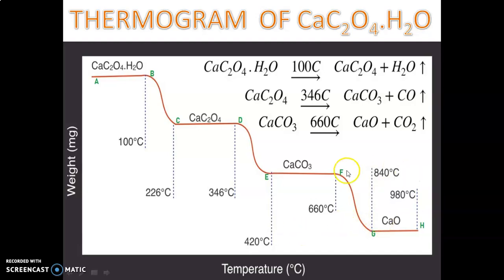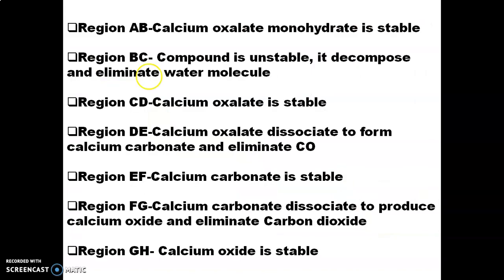In region A to B, up to 100°C, the curve is a steady straight line. This means from room temperature to 100°C there is no weight loss. No weight loss means no component is being eliminated. So in region A to B, calcium oxalate monohydrate is stable.